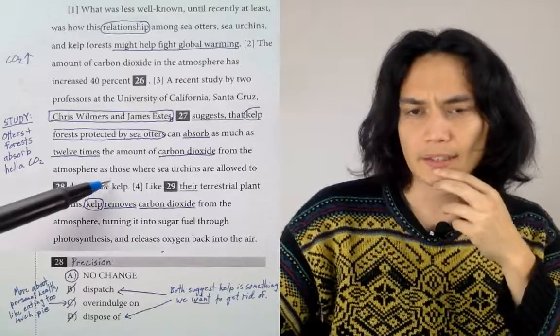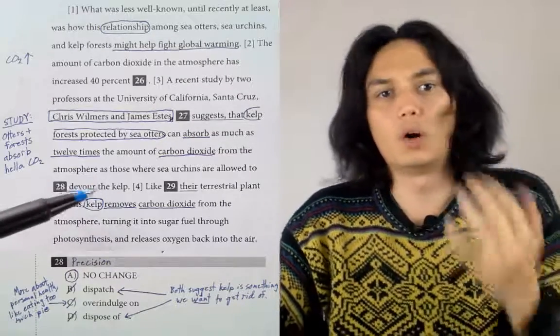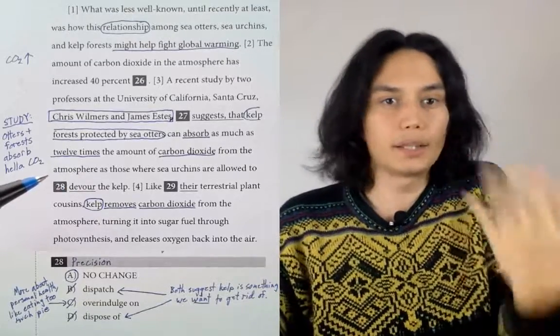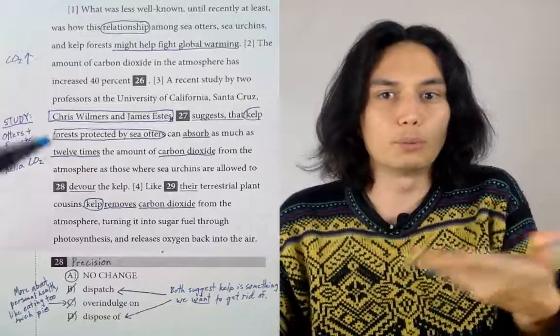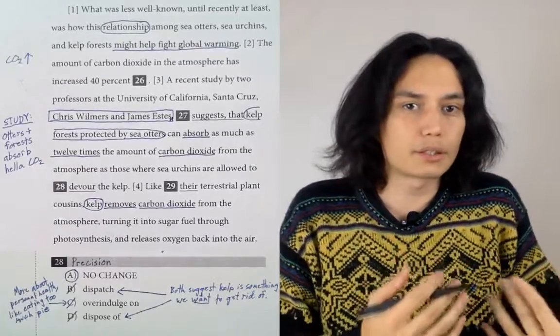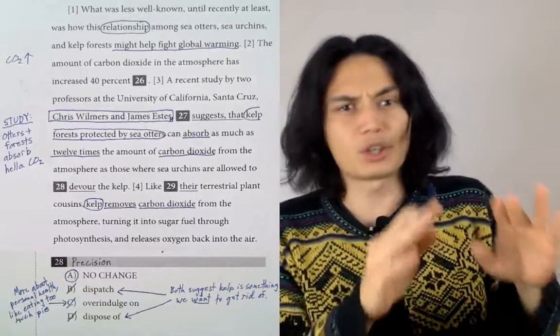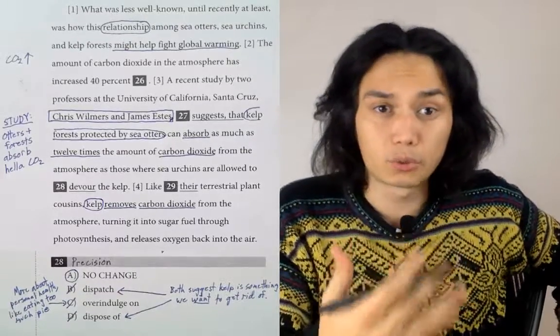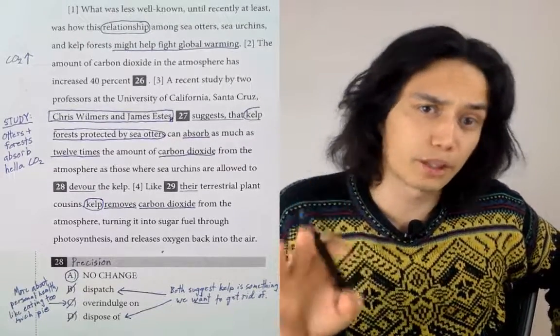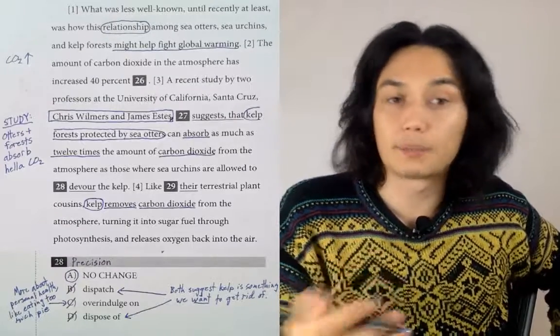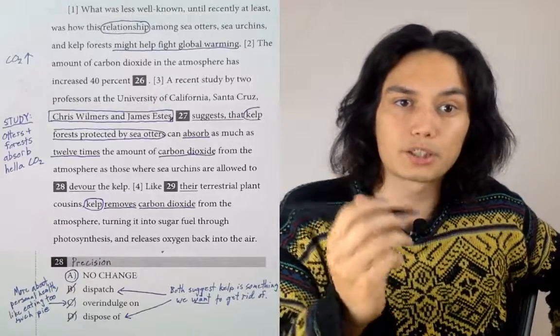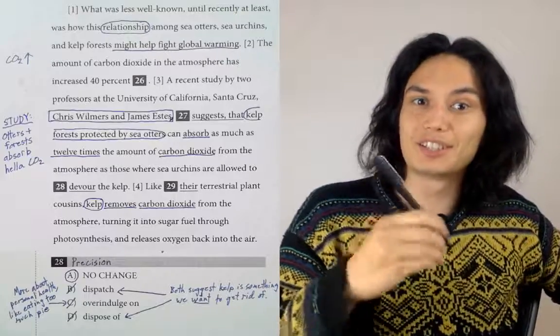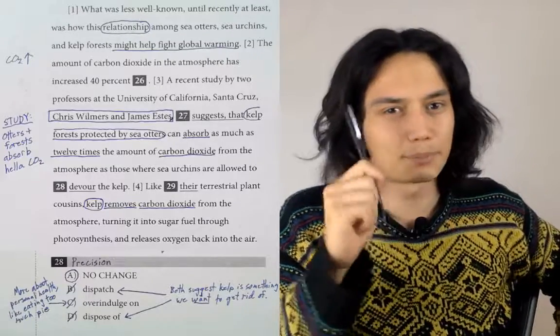This is treating the subject, the thing that's being dispatched, as something we're glad is gone. Good riddance. Here the kelp is not that kind of thing. We want to keep the kelp. We like the kelp. Kelp helps fight global warming. We like otters because they help protect kelp. A good example of dispatching would be the sea otters dispatching the sea urchins.